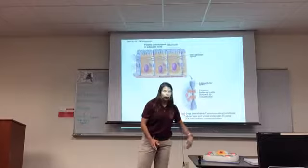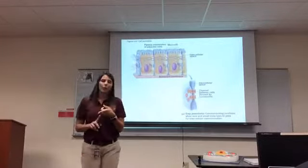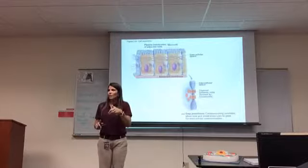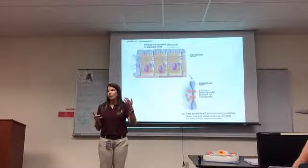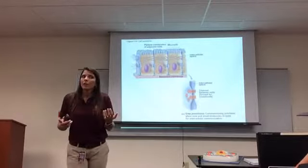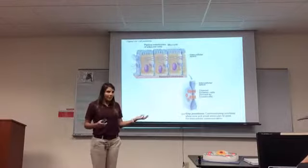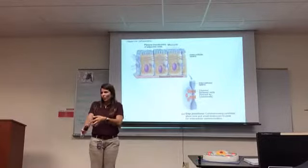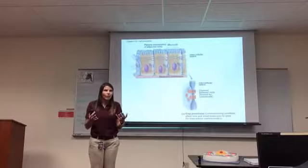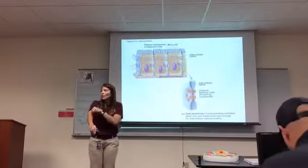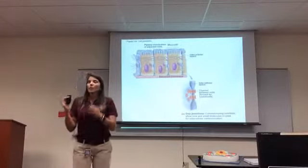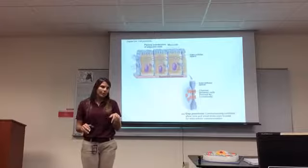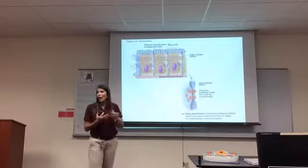We've talked about the cell membrane — the anatomy of it, being a phospholipid bilayer with hydrophobic and hydrophilic aspects and proteins peppered through it — integral proteins that go all the way through, and peripheral proteins found on the sides. The function of those proteins varies based on their shape. Then we talked about what holds cells together. Not all cells are held together — blood cells and sperm cells float around individually. But when cells are held together, like in your organs, they can be tight junctions, desmosomes, or gap junctions.